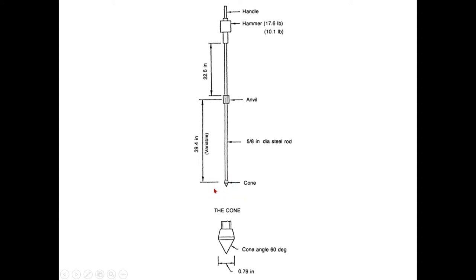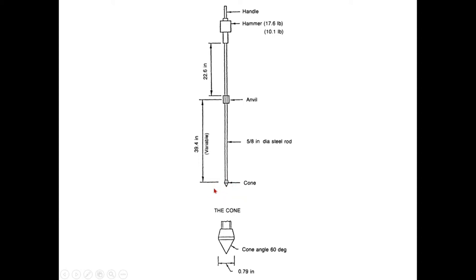You have similar equipment: you have the anvil, you have the hammer, with a free fall height of 750 mm and a 65 kg hammer, and this cone is driven down into the soil. Instead of the split spoon sampler, here we have a cone. The blow count for every 100 mm penetration is continuously noted — in SPT it was 150 mm.